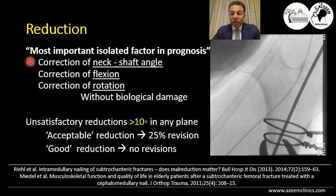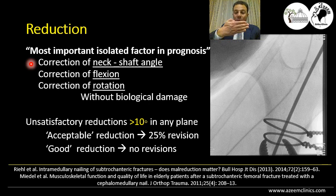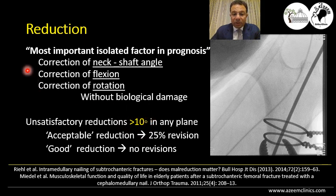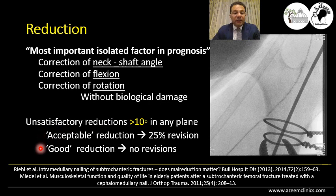What is the acceptable angulation here? We take it in two planes: the coronal plane (which is the AP view) and the sagittal plane (mediolateral), plus the rotational plane. Literature has demonstrated that angulation must be less than 10 degrees in any plane to have an acceptable reduction. More than 10 degrees is associated with a 25% revision rate, whereas good reduction of less than 10 degrees is associated with no revisions and high success.